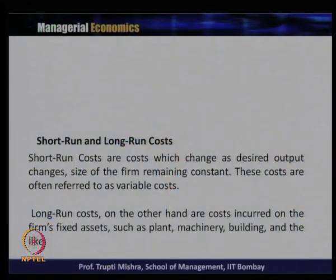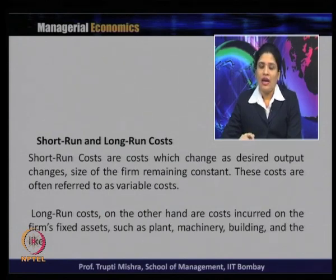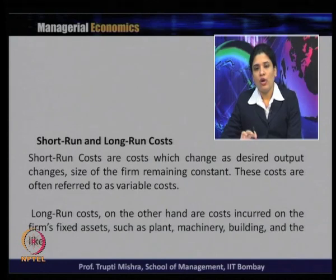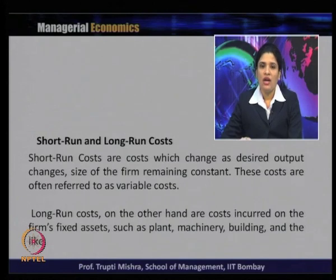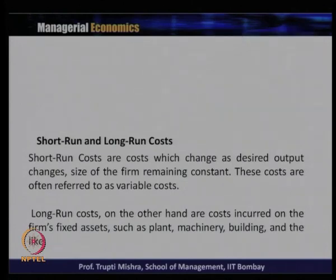Short run costs are costs that change as desired output changes, with the size of the firm remaining constant. These costs are often referred to as variable cost. Long run costs, on the other hand, are costs incurred on the firm's fixed assets such as plant, machinery, building, and the like. Whatever costs change with respect to the operational part are variable costs, considered as short run cost.